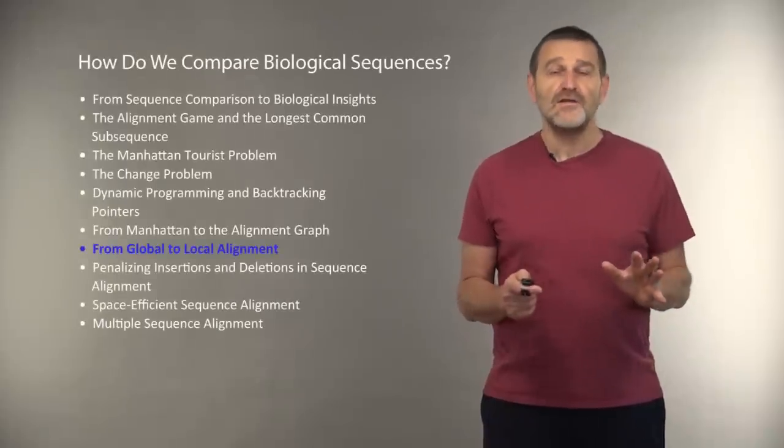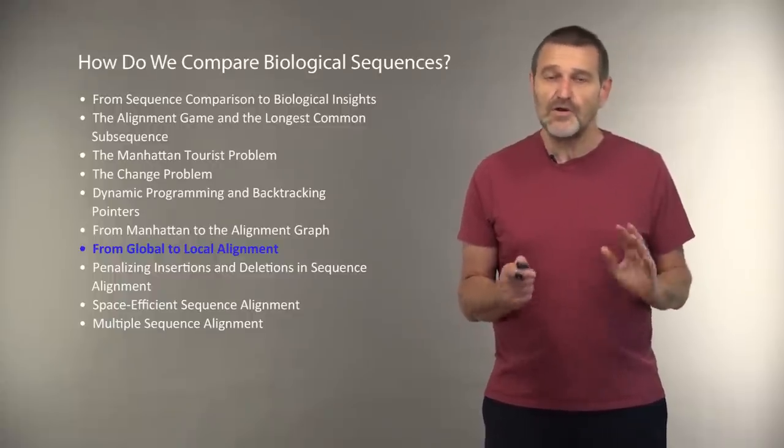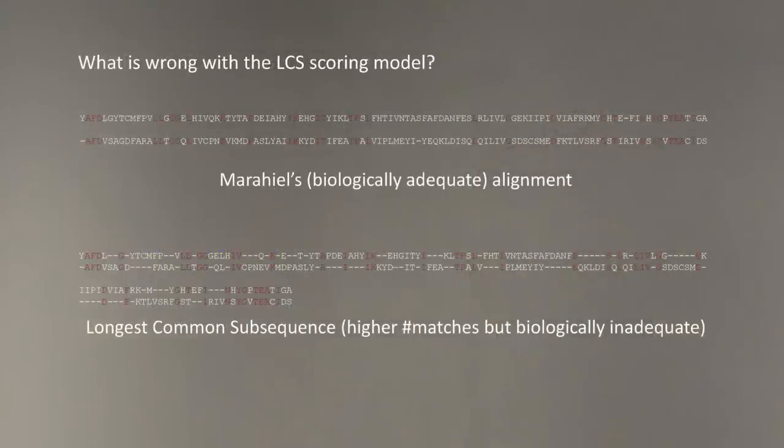There are many different phases of sequence comparison in biology, and we will now learn some of them. We'll ask first the question, what is wrong with the naive scoring model that we used for the longest common subsequence problem when we scored all matches by one?